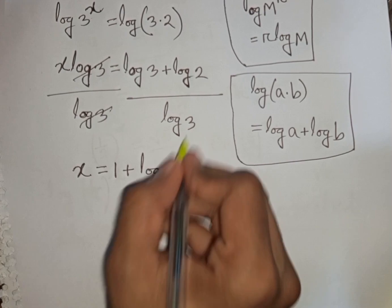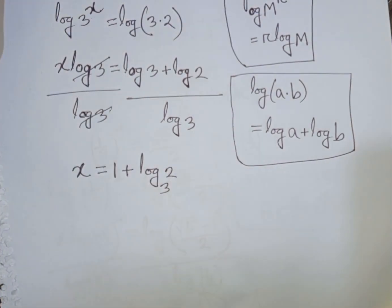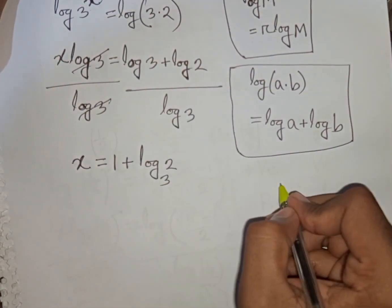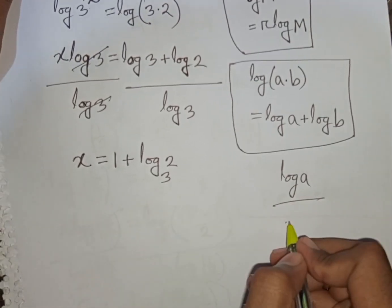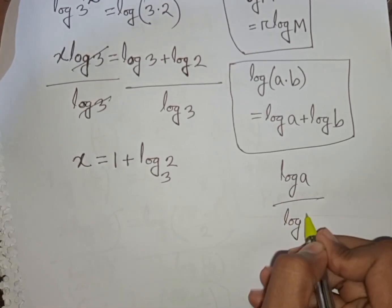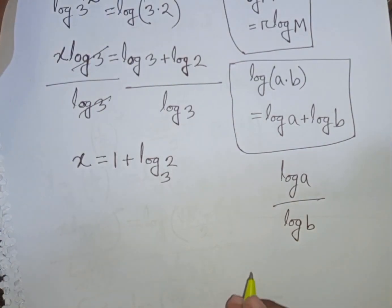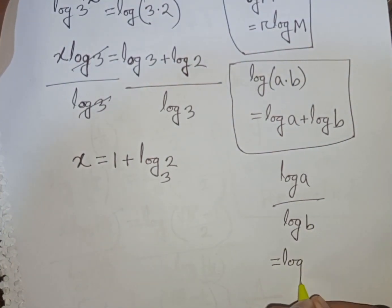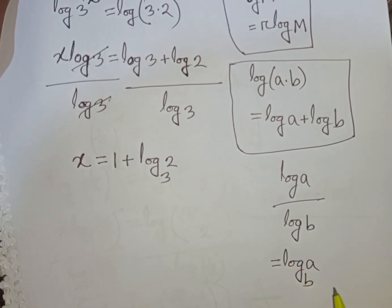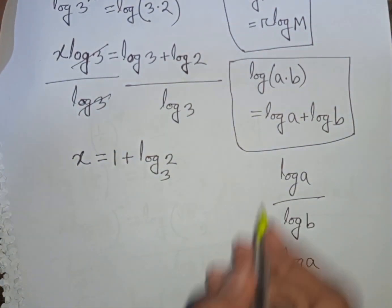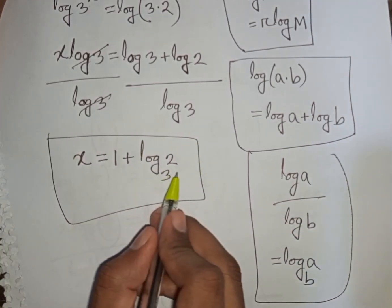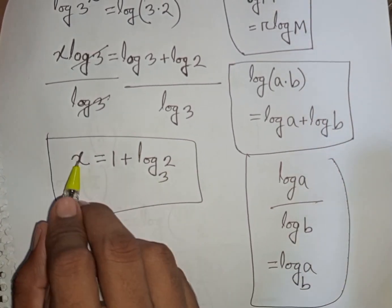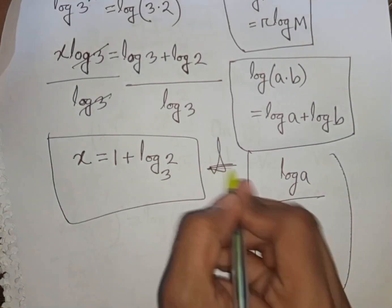That means log 2 over log 3 equals log 2 base 3. According to the rule, log a divided by log b is equal to log a base b. So x is equal to 1 plus log 2 base 3. This is the value of x and our final answer.